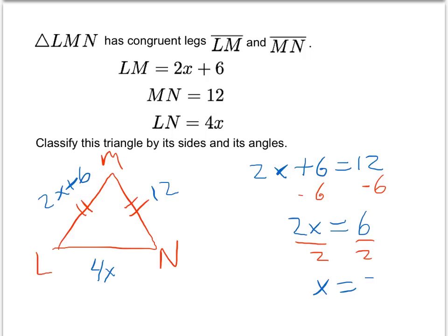So we get x is equal to 3, which means if I plug in 3 for this value of x, then we get 2 times 3 plus 6, which is 12. And that was expected because this length and that length were shown to be equal.